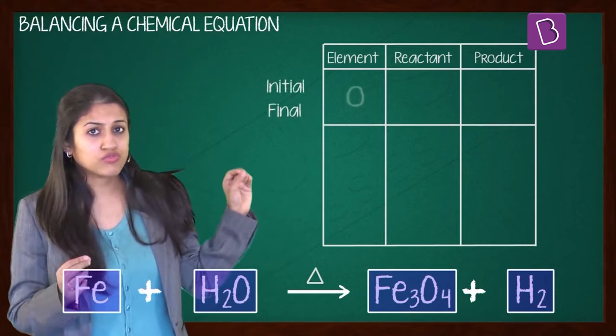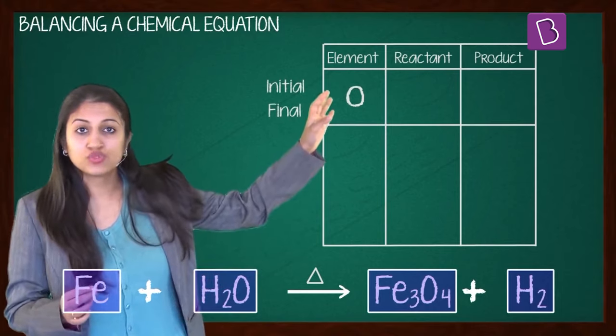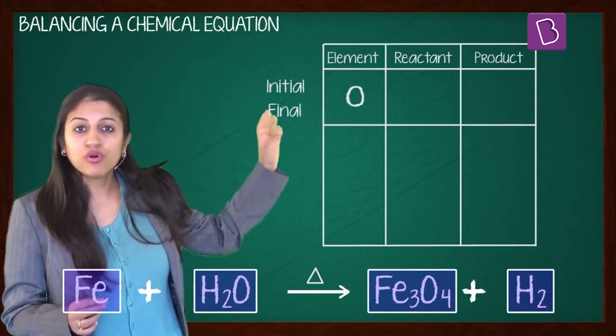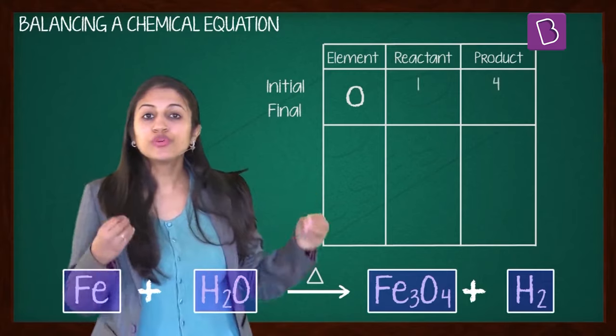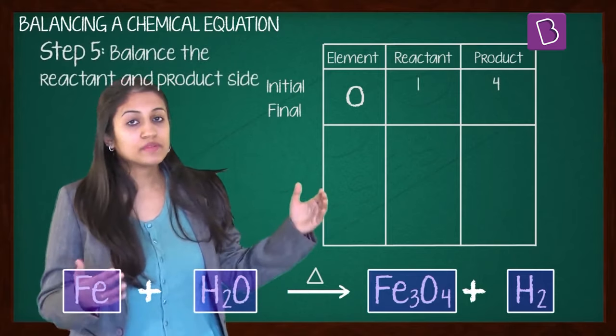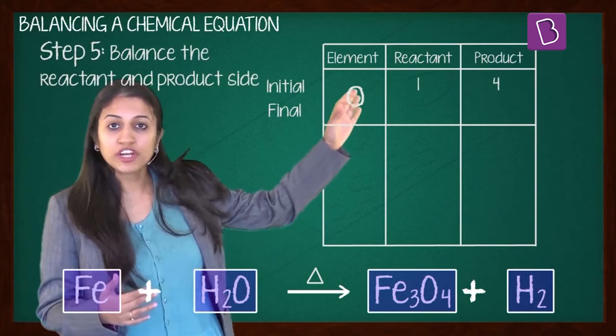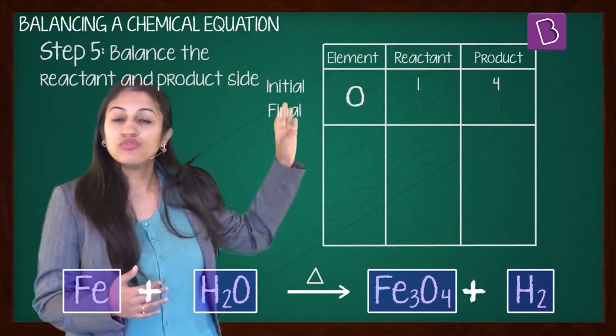Initially in the reactants, how many atoms of oxygen do you have? You have 1 in H2O. And in the product, you have 4 in Fe3O4. So in the reactants, you make it 4. So to balance, it will become 4, 1 into 4 in the reactants and 4 in the products.